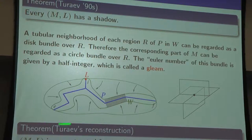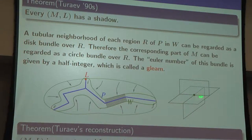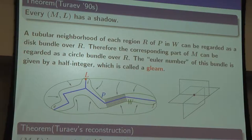Since it is a circle bundle, we have to think about the twisting — this is called the Euler number. If we carefully check the framing along the triple line, the framing is given by the other two faces. Sometimes, if you follow around, you get a Möbius band, which means the Euler number must be a half-integer. So the gleam is given by a half-integer. This definition is not so important in this talk — just think of it as a kind of Euler number.